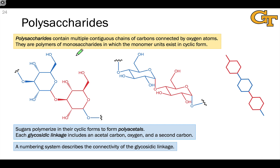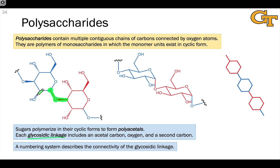Polysaccharides contain multiple monosaccharides linked through glycosidic linkages. We can think of polysaccharides as polyacetals, since the anomeric carbon involved in the glycosidic linkage is part of an acetal functional group. Here, highlighted in green is one example of a glycosidic linkage within a hypothetical polysaccharide. We represent polysaccharides in a number of different ways — we can use this flat hexagonal representation of the monosaccharide unit with wedges and dashes to show the positions of the hydroxyls.